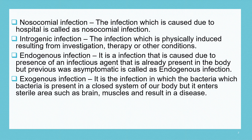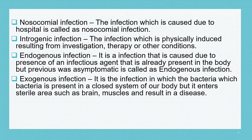Ninth is exogenous infection. It is an infection in which bacteria present in a closed system of our body enters a sterile area such as the brain or muscles and results in disease. Some organs of our body are completely sterile — no microorganisms are present there. When microorganisms present in the closed system of our body enter a sterile organ, for example causing meningitis in the brain, such a disease is called exogenous infection.